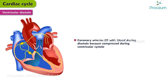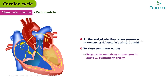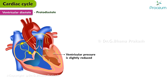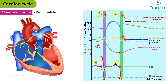Ventricular diastole. The coronary arteries fill with blood during diastole because they are compressed during ventricular systole. Its duration depends on heart rate and can be divided into five phases. Protodiastole: at the end of ejection, pressures in the ventricles and aorta are nearly equal. The ventricular pressure falls slightly, closing the aortic and pulmonary valves. Closure of the aortic valve produces the incisura or dicrotic notch on the aortic pressure curve and also produces the second heart sound, marking the end of ventricular systole and beginning of ventricular diastole.